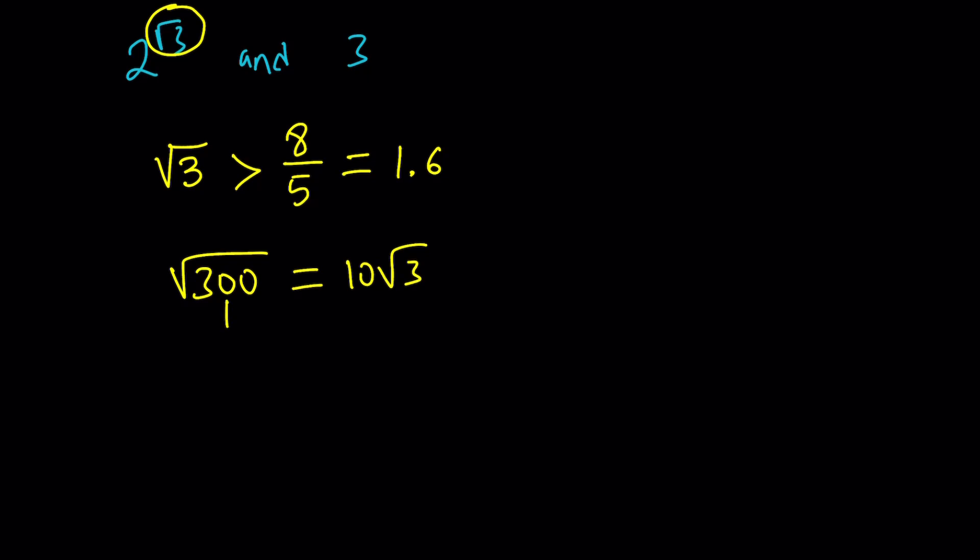So, the number that's kind of close to 300, there's actually two numbers. One of them is 324, and the other one is 289. As you hopefully know, this is 18 squared, and this is 17 squared.